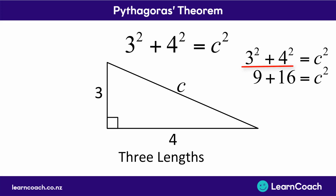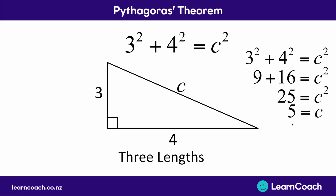3 squared is 9 and 4 squared is 16, so let's add them together. That still equals c squared, and we have 25 equals c squared. We don't want to find c squared — we want to find c. The way we get rid of the squared is we square root both sides. So c is actually the square root of 25, which is 5.